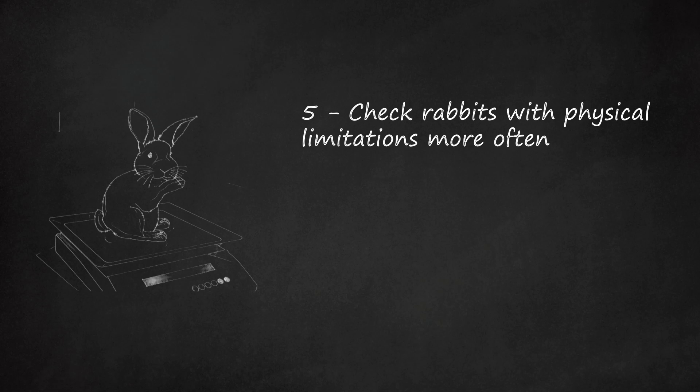If your rabbit is already overweight, then it's essential to perform twice daily checks as they are at greater risk of fly strike. Aim to slowly reduce their weight by cutting back on their pellets and switching them onto hay. You should also check rabbits with arthritis more often. A stiff arthritic rabbit cannot turn around so easily and is more liable to become soiled.